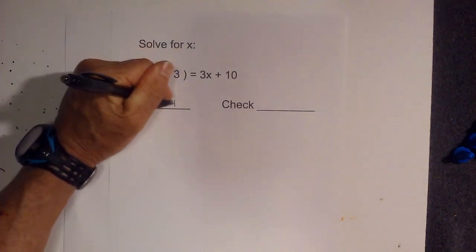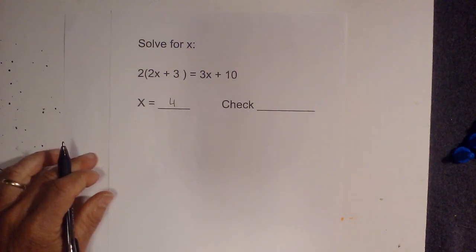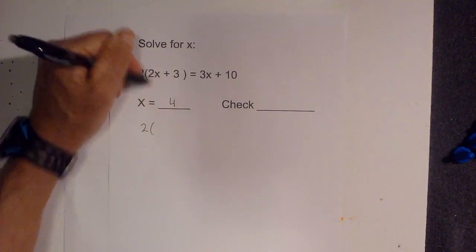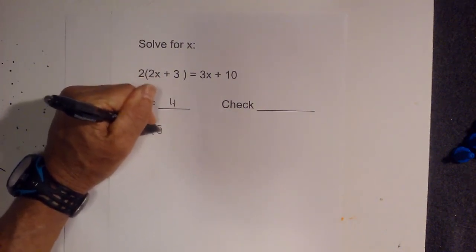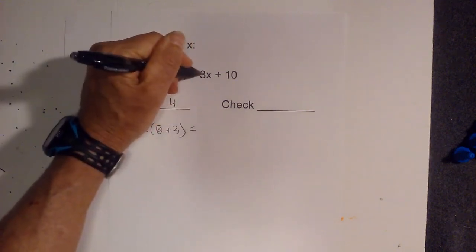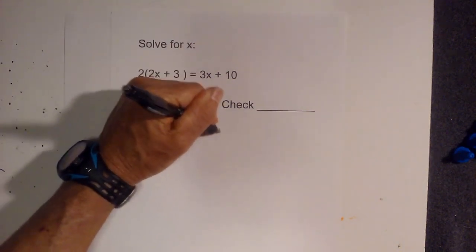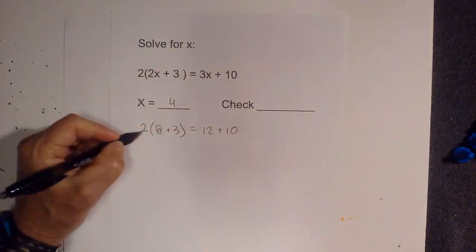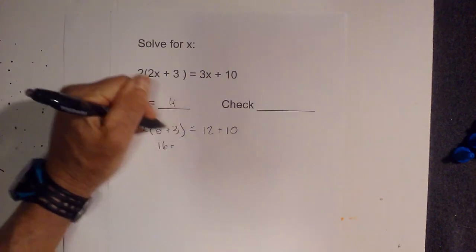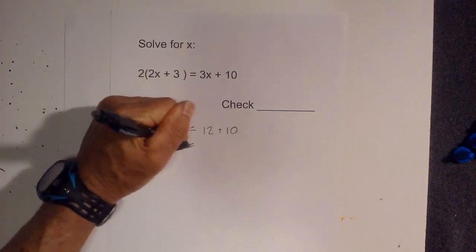x is 4, so I'm going to plug this in, and that becomes 2 times, 2 times 2 is 4, is 8 plus 3, equals 3 times 4 is 12 plus 10. 2 times 8 is 16, 2 times 3 is 6, equals, I'm going to bring this down just to make it pretty.